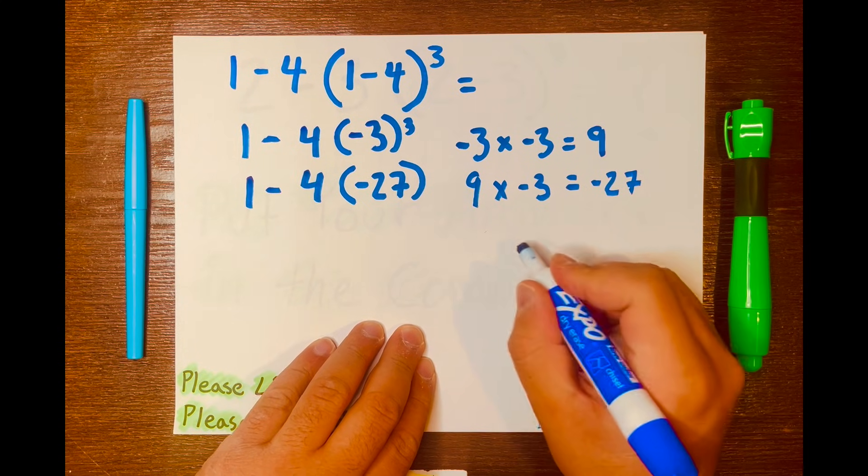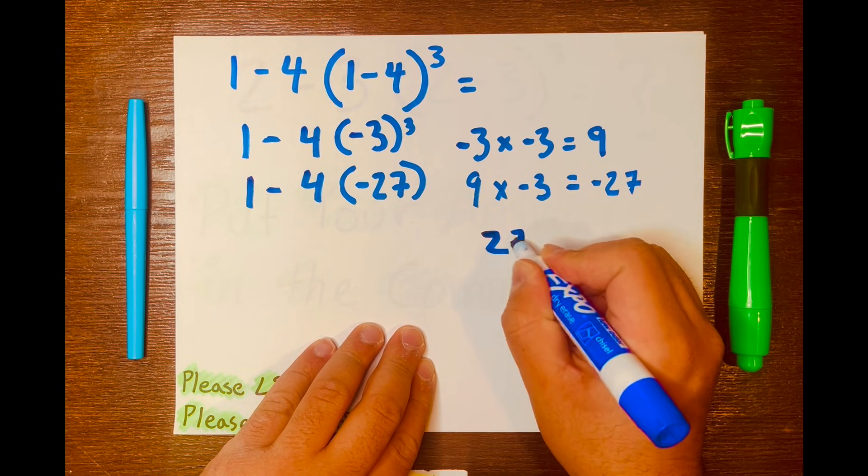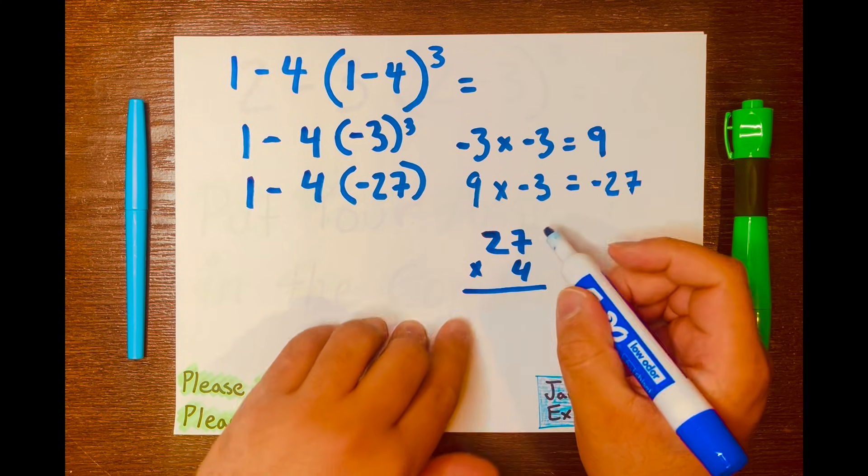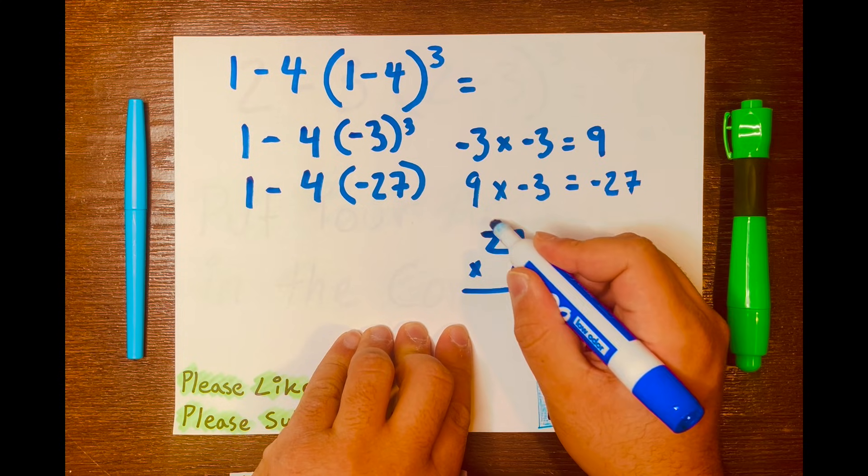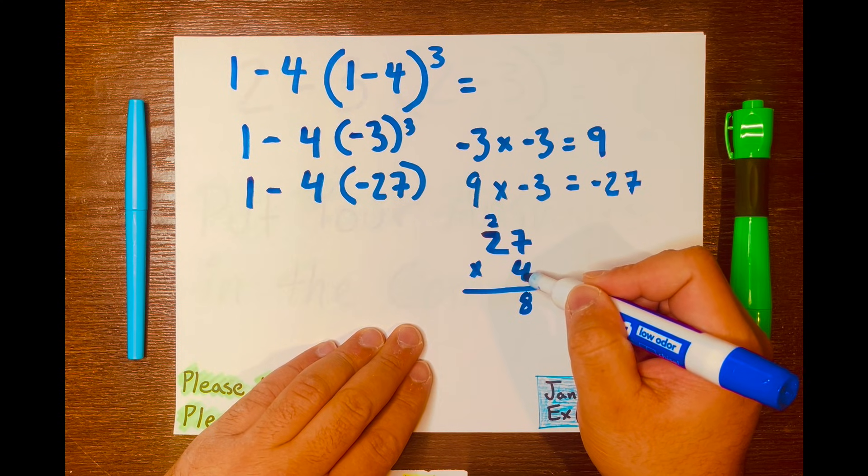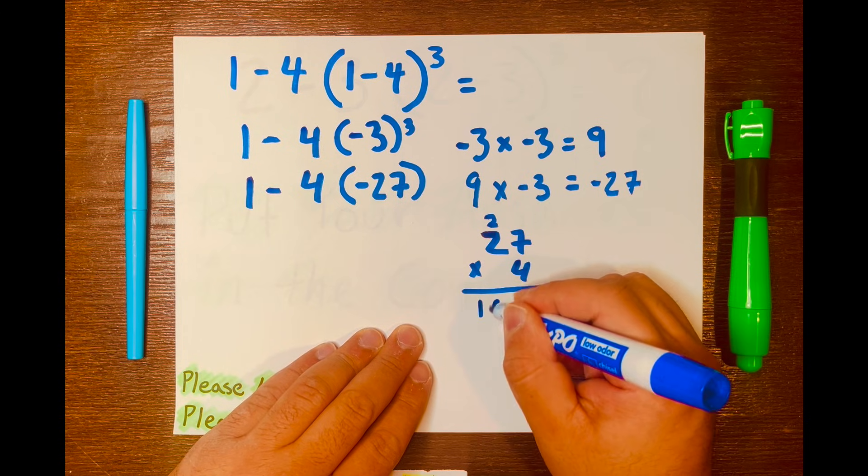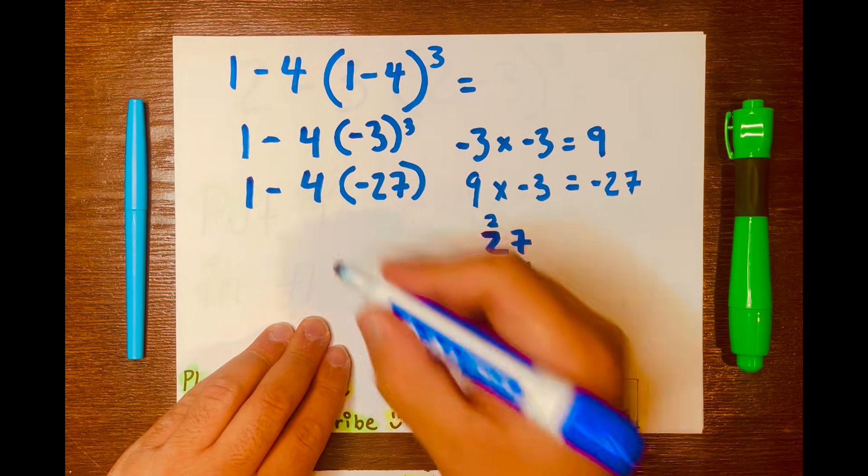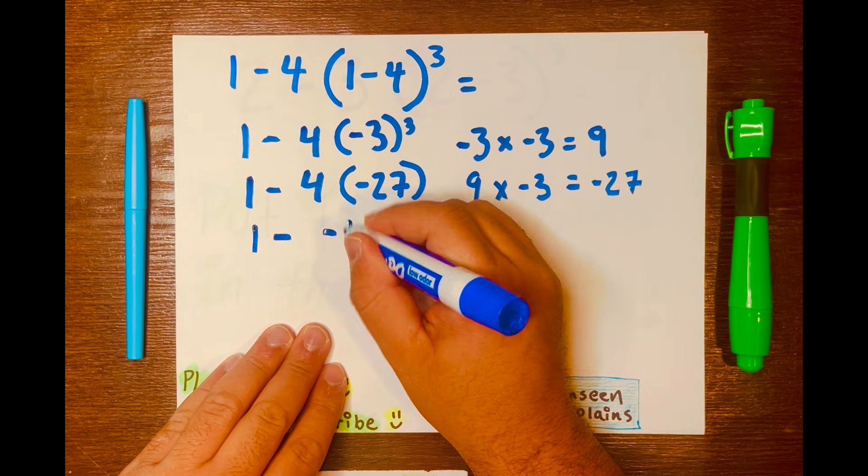So I'll write it here. Actually let's just say 27 times 4. And 7 times 4 is 28. And 2 times 4 is 8, plus 2, 9, 10. So it'll be 108. And we know it's a negative, so we'll write it here: 1 minus negative 108.